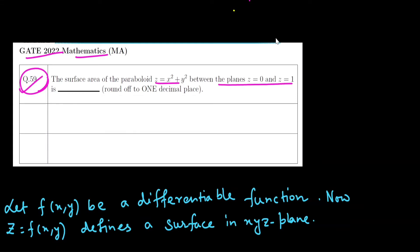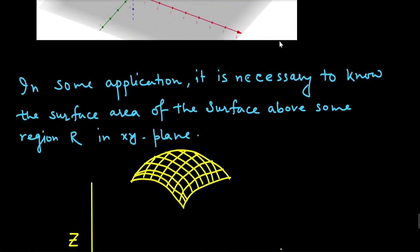First we note the theorem — the concept behind this problem. Let f(x,y) be a differentiable function. If we write z = f(x,y), this defines a surface in xyz space and we need to find the surface integral in the xyz plane. In some applications it is necessary to know the surface area of the surface above some region R in the xy plane — that is, we convert the surface from xyz space down to the xy plane.